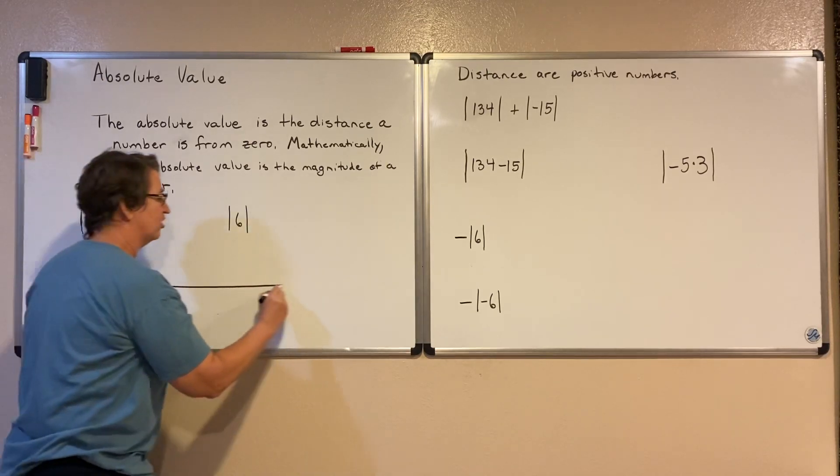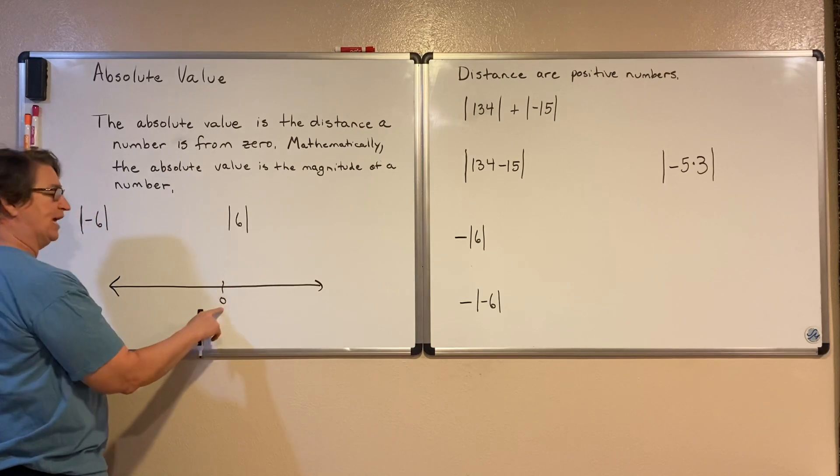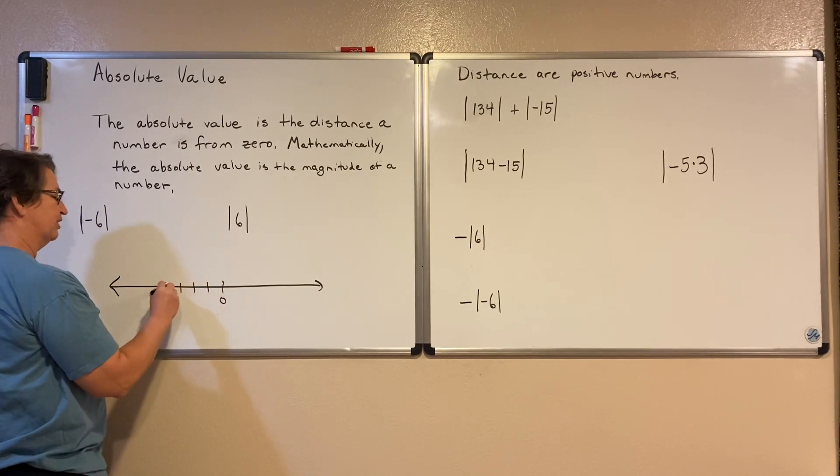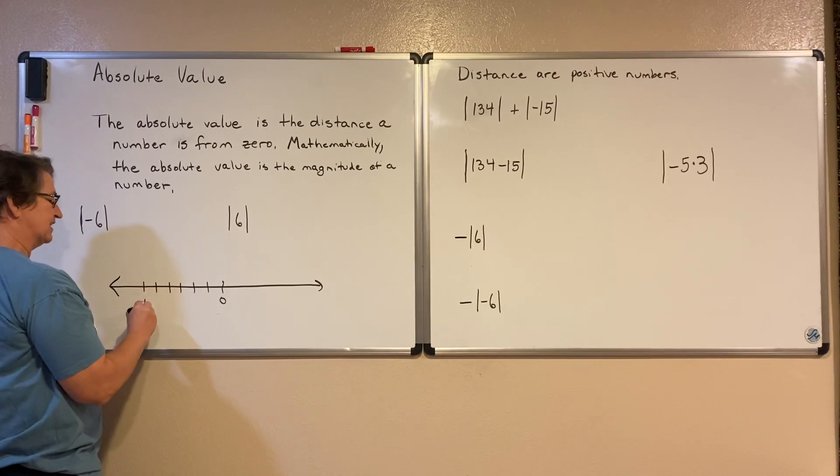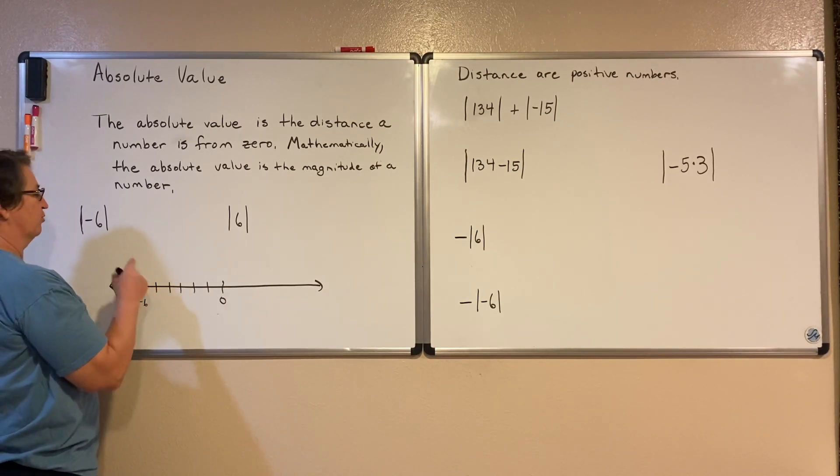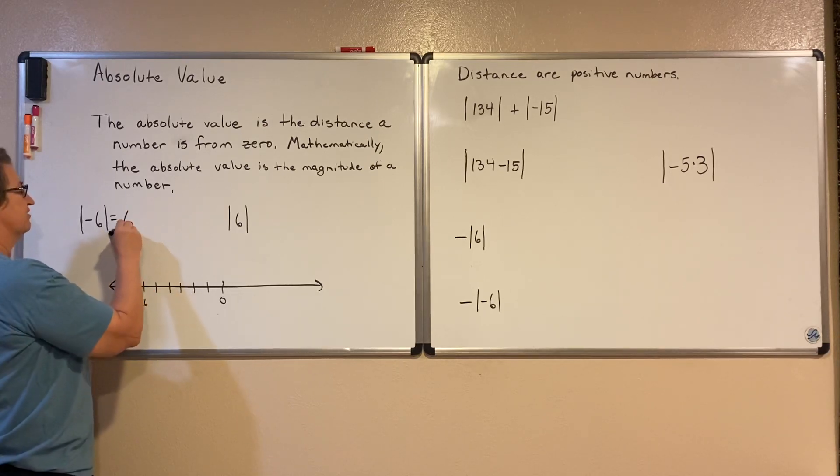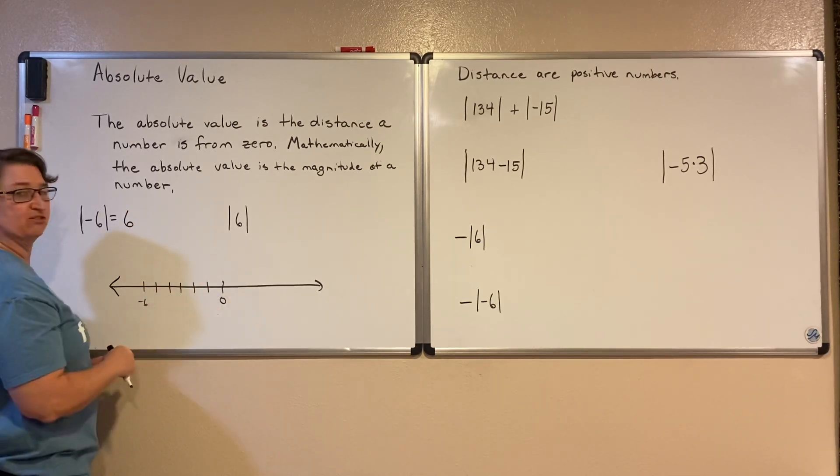And if I look on a number line to see how far away is negative six from zero, well it's one, two, three, four, five, six spots from zero. So the absolute value of negative six is six. It's six units from zero.